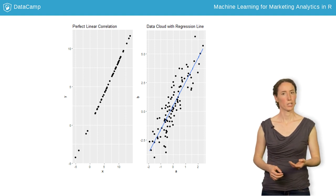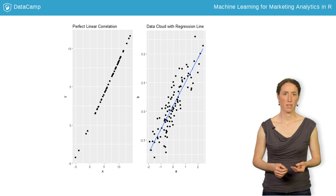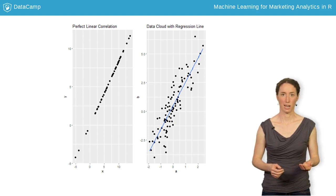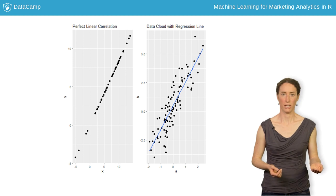This is what we use the least squares estimation procedure for. This method helps us find the regression line and returns its coefficients. The difference between our prediction, a point on the line, and the actual value, a data point, is called the prediction error or residual value.